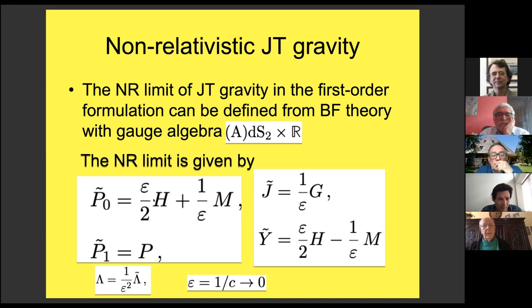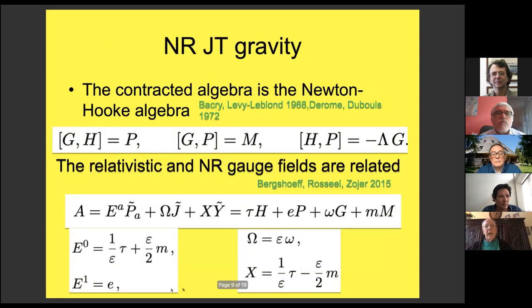In order to realize the non-relativistic limit one should consider the gauge algebra sl(2,R) cross R. Here there is the change of tilde—objects with tilde are the relativistic ones and without tilde the non-relativistic ones. Also there is a relation among the relativistic cosmological constant and epsilon is one over c, and c is going to infinity. When we do that we get something that is well known since the old days called the Newton-Hooke algebra. There are two types of Newton-Hooke algebra depending on the value of the cosmological constant, positive or negative.